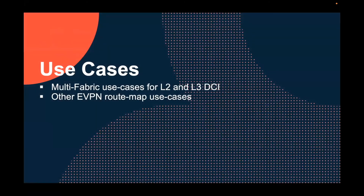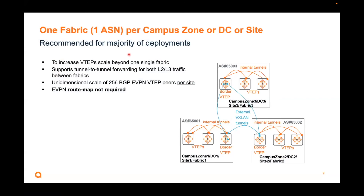Use cases: for most customer deployments, we recommend keeping it simple — one fabric, one AS number per site. Here I have three fabrics, each with different AS numbers: 65001, 65002, and 65003. In this case, the limit is the 256 data sheet number of EVPN peers per site, and you do not require EVPN route maps. Keep it simple.